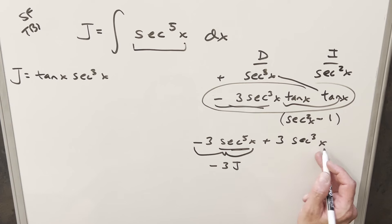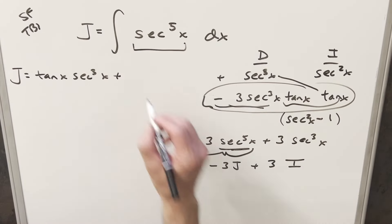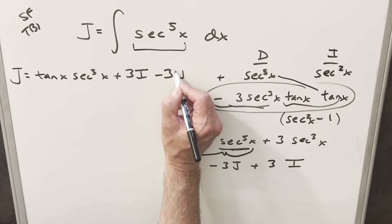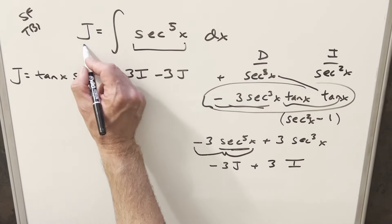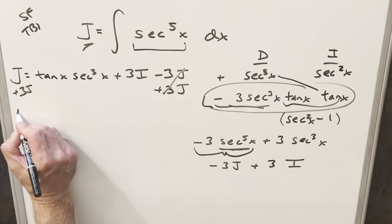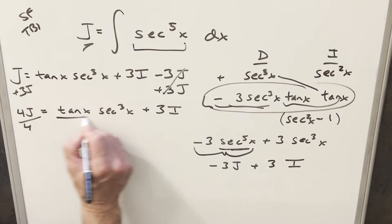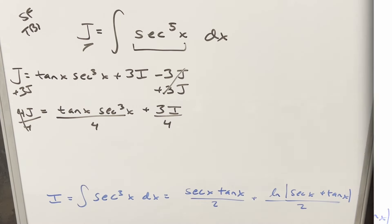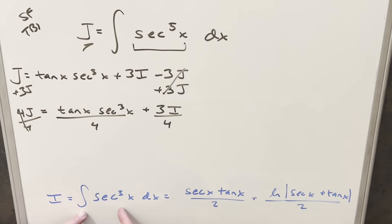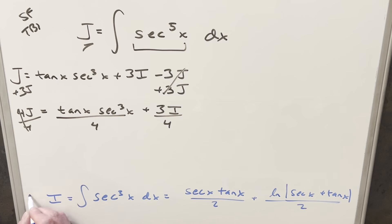So putting this together, J equals tan x · sec³x plus three I minus three J. Adding three J to both sides gives four J equals tan x · sec³x plus three I. Dividing by four isolates J. We bring back the I value from the previous board, remembering we're multiplying by three fourths, so we want three fourths of each term in I.